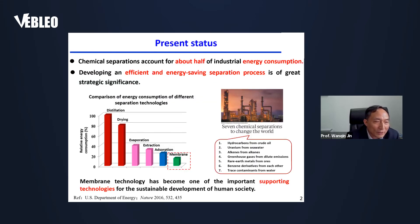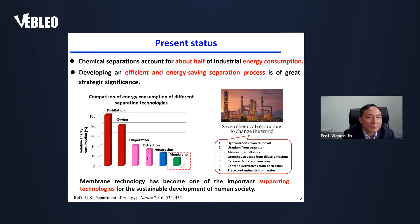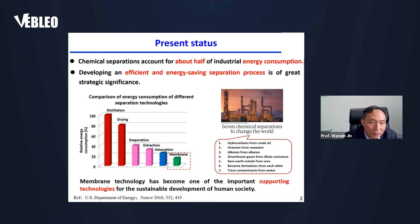Generally, chemical separations account for about half of industrial energy consumption. It's very important to develop an efficient and energy-saving separation process. Compared with conventional separation technologies, membrane technologies consume less energy. Nowadays, membrane technology has become one of the important supporting technologies for the sustainable development of human society.